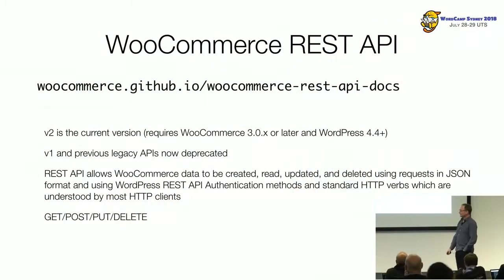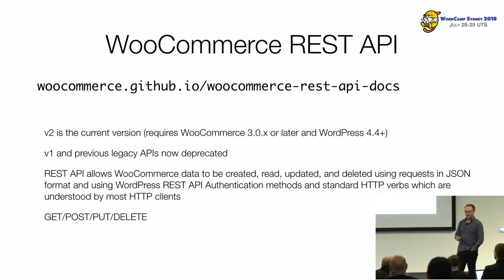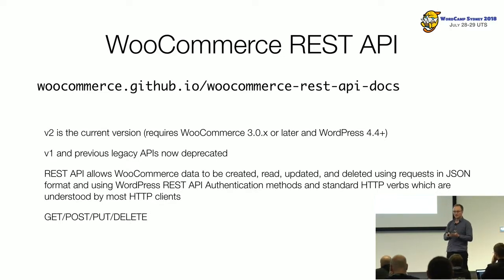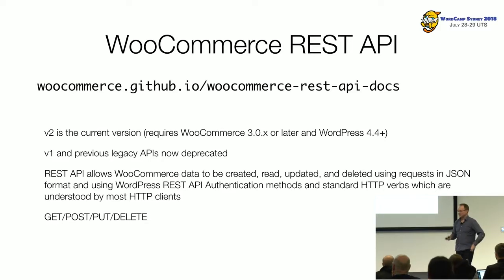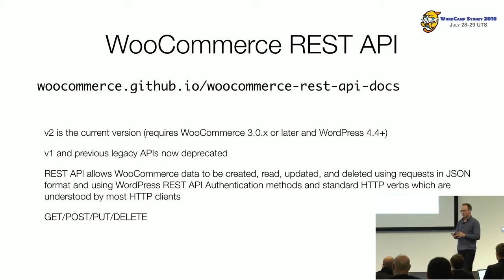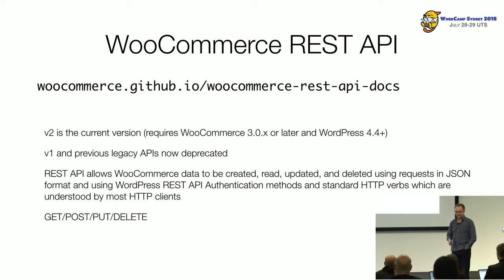Let's get into the details of the WooCommerce API itself. The documentation is on GitHub and it's very well documented. Version 2 is the current version. You don't need to install or enable it — it's just in WooCommerce and everyone gets it automatically. Version 2 came out with WooCommerce 3; version 1 has been deprecated, so don't use version 1 or the legacy API. It's fully integrated into the WordPress REST API, so it's a RESTful API. You can use standard HTTP verbs — GET, POST, PUT, DELETE — to make requests and get a response back, and it uses REST API authentication. On the docs you'll see code samples for popular programming languages like curl, Node.js, PHP, Python, and Ruby.